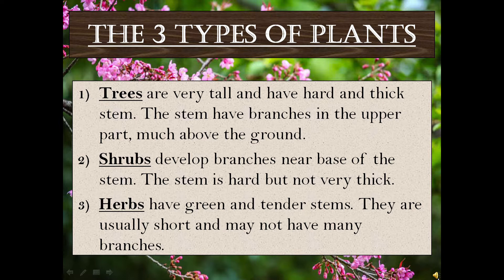Second, shrubs. Shrubs develop branches near the base of the stem. The stem is hard but not very thick. Third, herbs. Herbs have green and tender stems. They are usually short and may not have many branches.